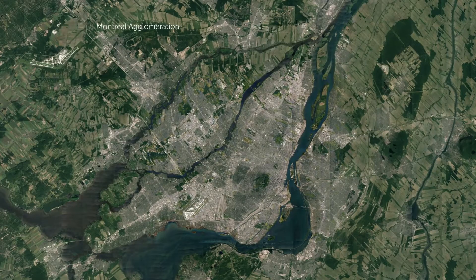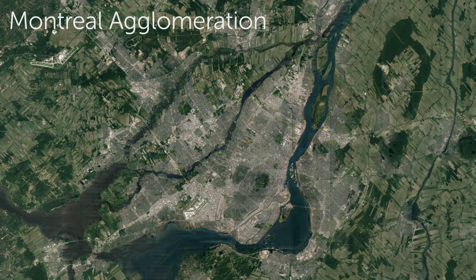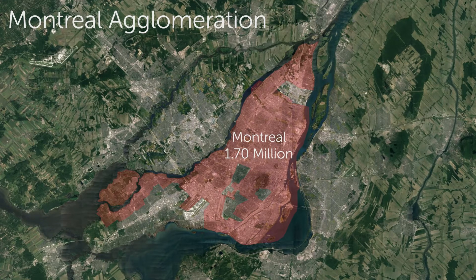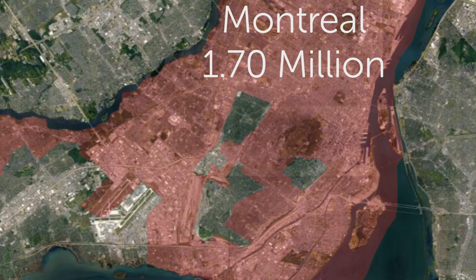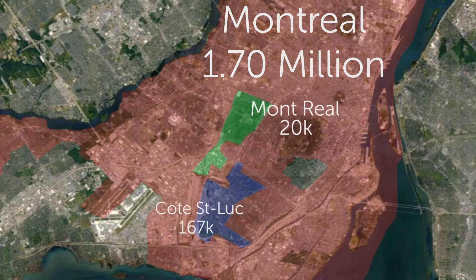Moving on to other cities in Canada, we will notice that this phenomenon actually repeats itself for all of Canada's largest cities. Montreal, for example, has a very similar dynamic to Toronto. Montreal city proper is isolated within the island of Montreal, with a population of 1.7 million. We can also notice with this map that there are several chunks carved out of the city limits, which are independent municipalities — some of them being relatively small, such as Mont-Royal and Westmount.